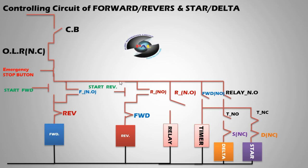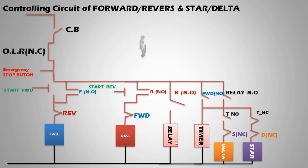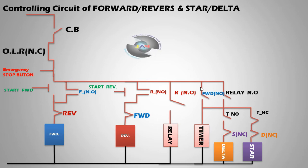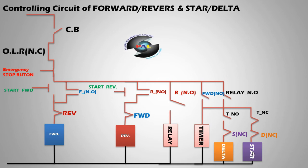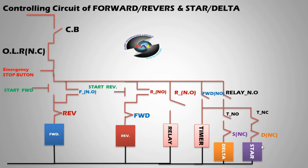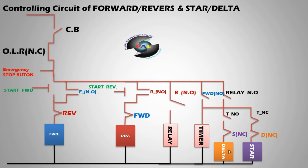For forward operation: when the forward button is pressed, the relay turns ON. When the relay is ON, you connect to forward, and the timer is connected to maintain star and delta. Initially the motor starts in star, and then after 20 or 15 seconds, the star turns OFF and delta runs.